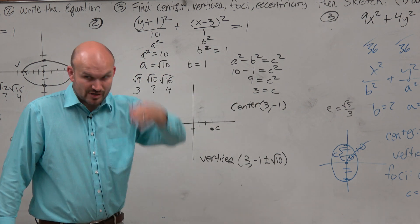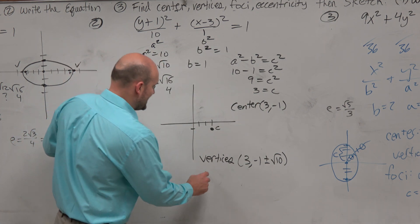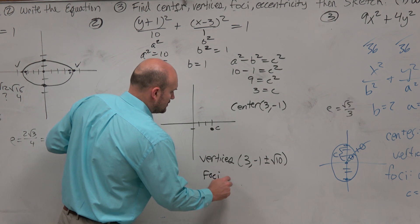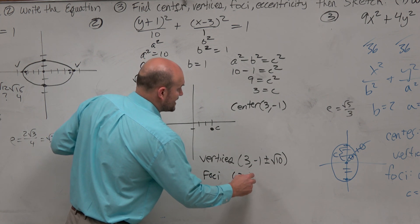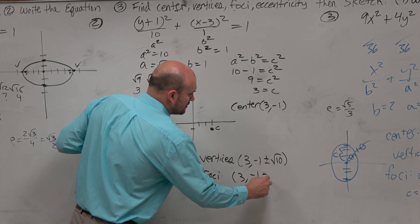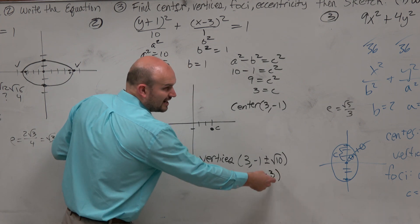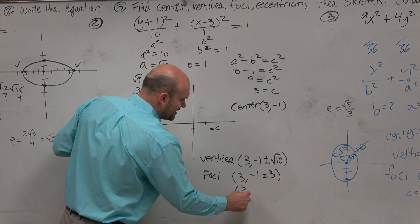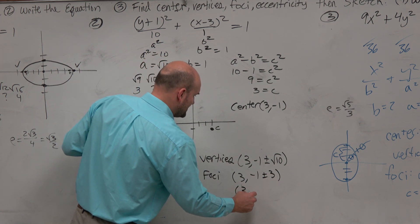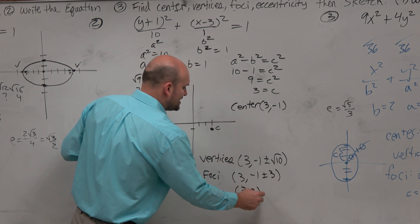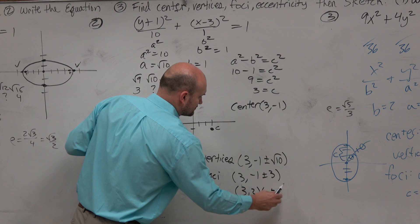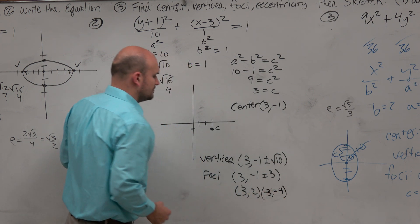Now again, remember the foci are in the same direction as the vertices, so we're just going to add and subtract 3 to there. However, I would like you to break that up. So negative 1 plus 3 is going to be 2, and negative 1 minus 3 is going to be negative 4.